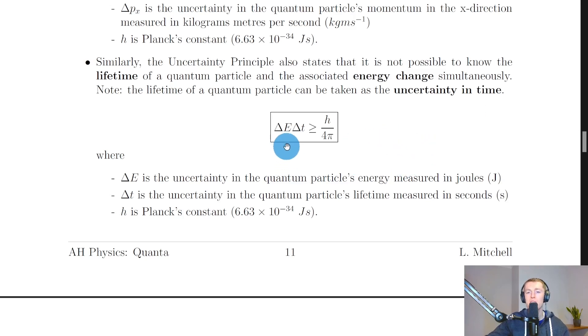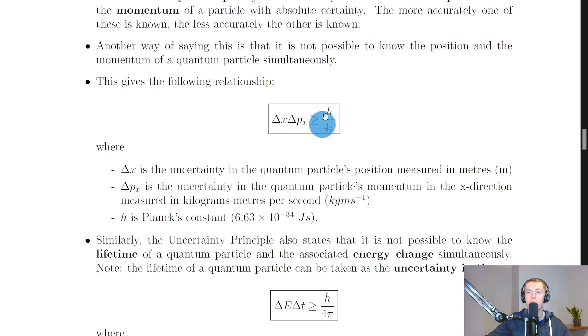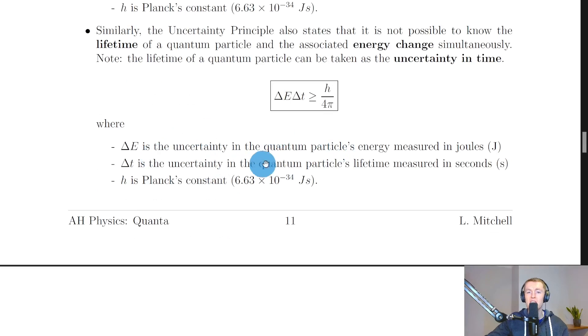So we have delta E times delta t is greater than or equal to h over 4 pi. So the same right hand side that we had before. And delta E is the uncertainty in the quantum particle's energy measured in joules. Delta t is the uncertainty in the quantum particle's lifetime measured in seconds. And h is Planck's constant as before.